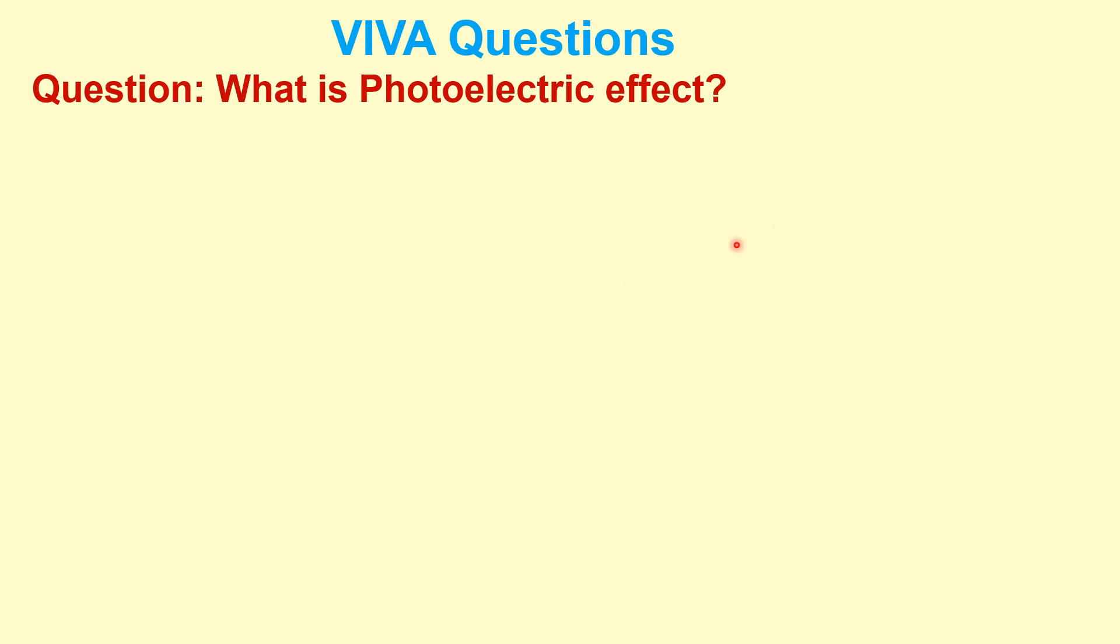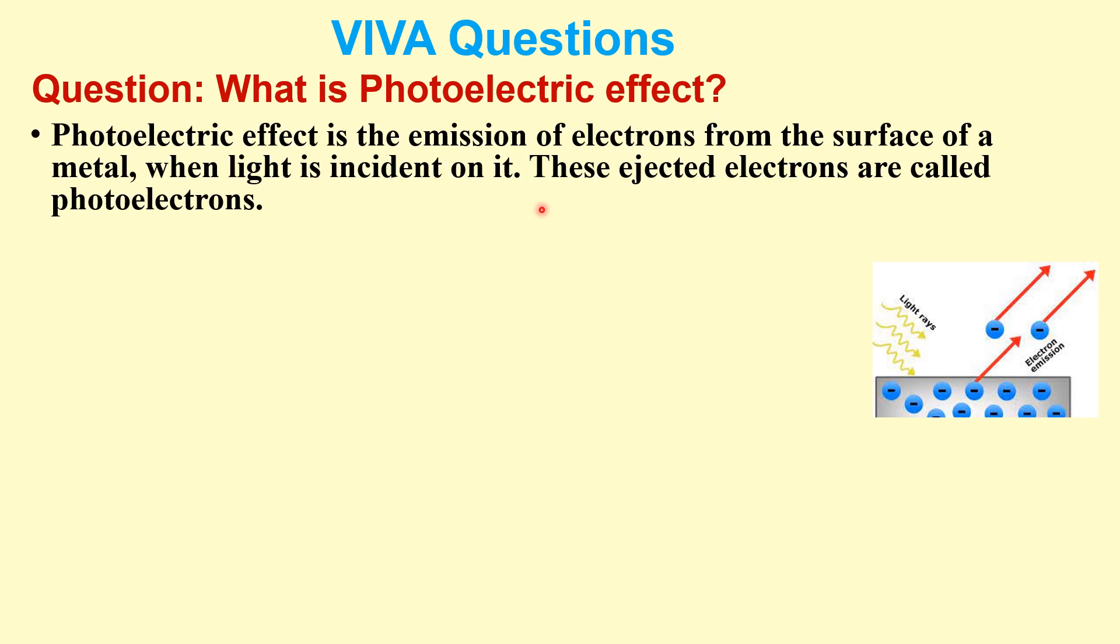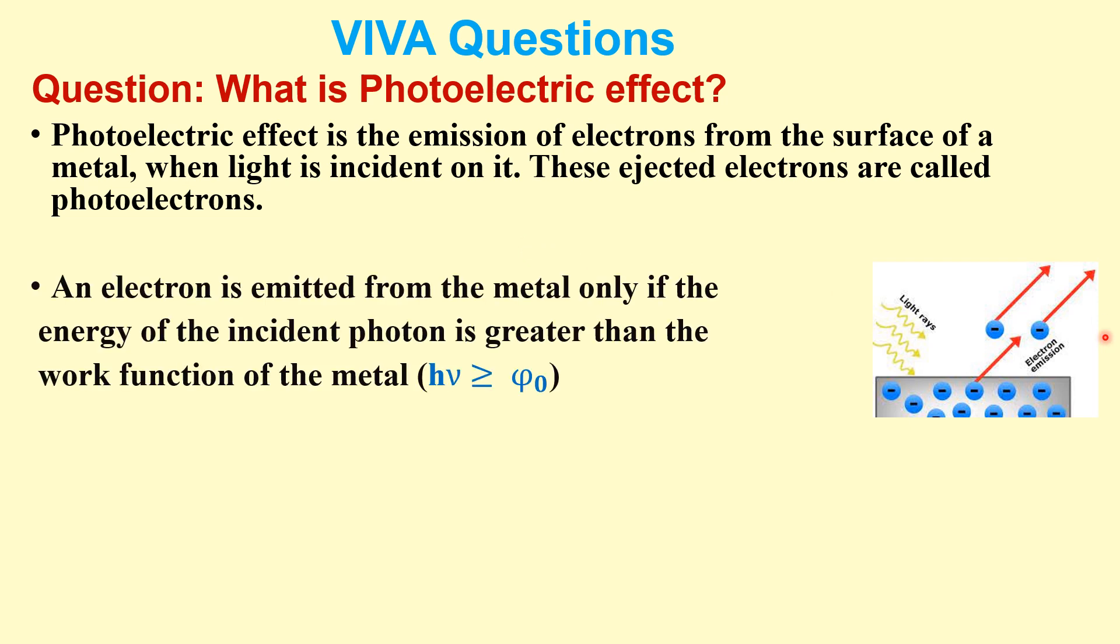Now there are some Viva questions. What is photoelectric effect? Photoelectric effect is the emission of electrons from the surface of a metal when light is incident on it. These ejected electrons are known as photoelectrons.